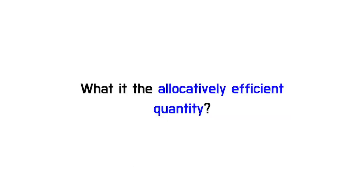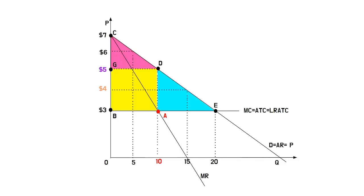Let's solve the last question, finding the allocatively efficient quantity. As we learned that the allocatively efficient quantity is at P equals MC, the answer might be 20.